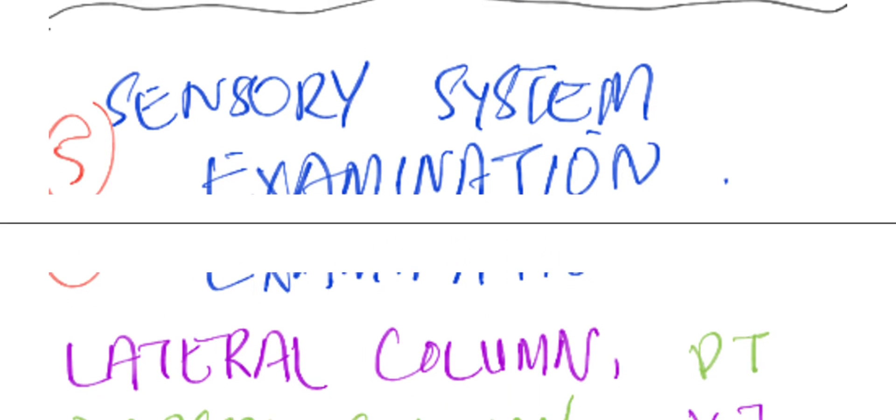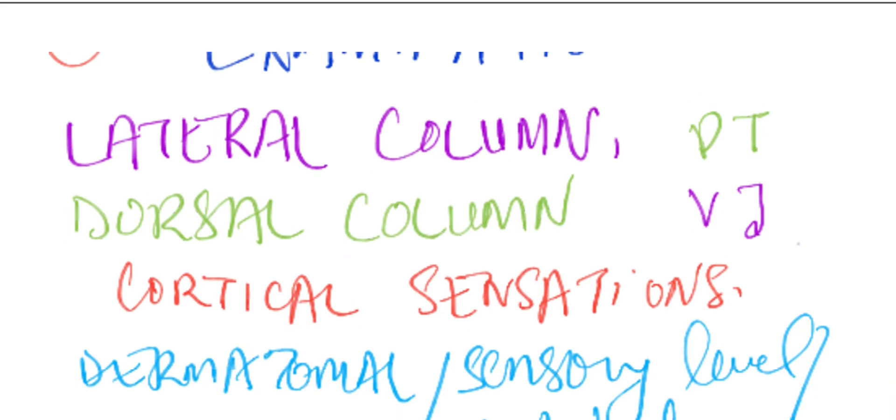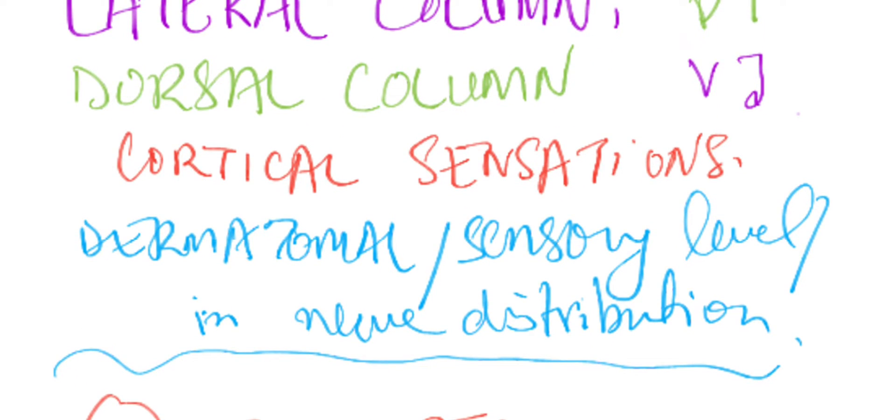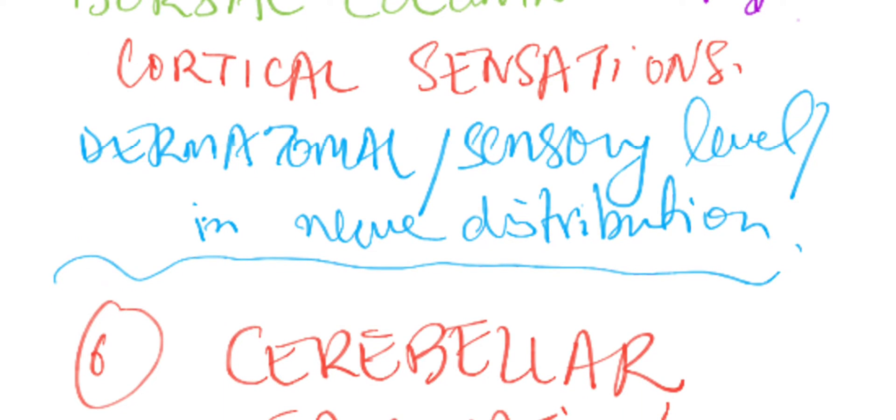Then sensory system examination, up at number five. You check the lateral column sensations that are pain and temperature, the dorsal column sensations—vibration, joint position sensation. Check all the cortical sensations. If you're looking at a patient with stroke, you check for two-point tactile discrimination, graphesthesia, and all the cortical sensations also in special circumstances and patients that are relevant. Check the dermatomal loss of pain and temperature or sensations. You may check it in a nerve distribution loss and look for a sensory level, especially if you've got a patient of paraplegia or quadriplegia.